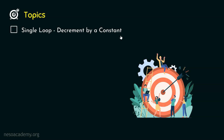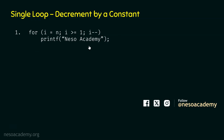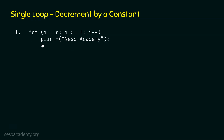Let's get started. Let's take the first for loop: for i equal to N, i greater than or equal to 1, i minus minus, printf Nesso Academy. In order to find the time complexity of this loop, we need to determine how many times this loop will run — or how many times this printf function will run — because the time complexity of a loop is the same as the frequency count of the innermost instruction.